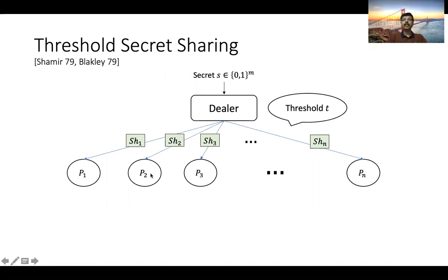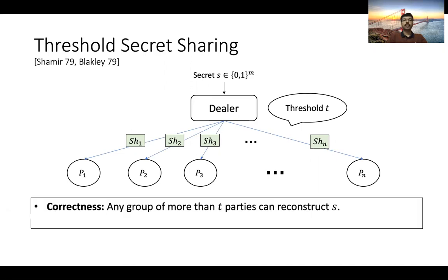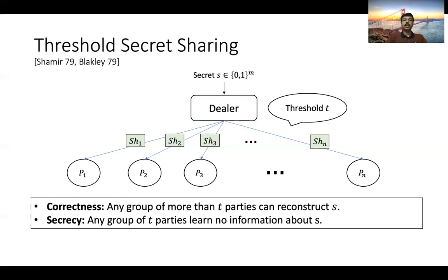We want our threshold secret sharing to satisfy two properties. The first, the correctness property, requires that any group of more than T parties can come together and use their shares to reconstruct the secret S. The second, the secrecy property, requires that the shares corresponding to any group of T parties reveal no information about the underlying secret.